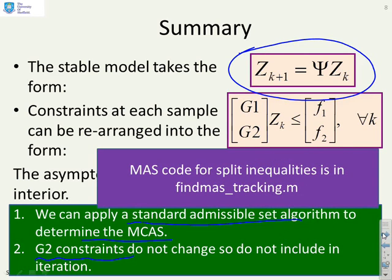So simple code for you is in this file here, findMAS underscore tracking. And the reason it's got a different name is this file allows for this split in the inequalities between ones that must be satisfied at all K and ones that must only be satisfied at the first sample.